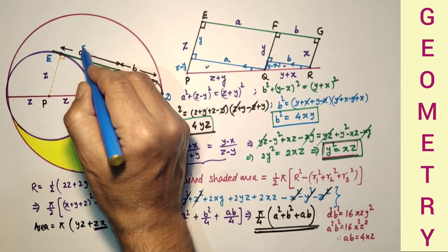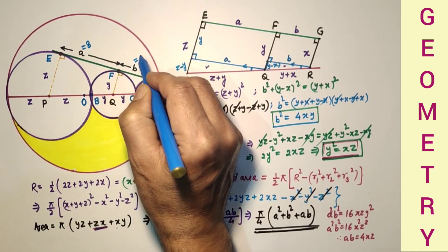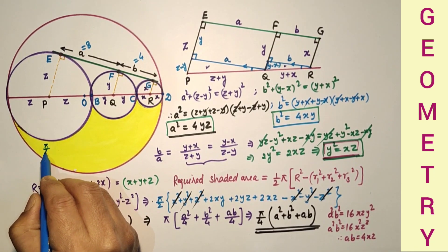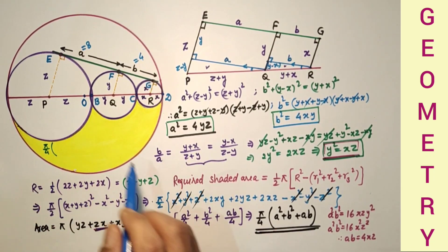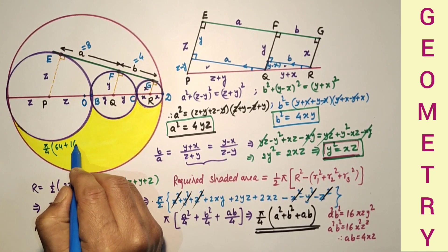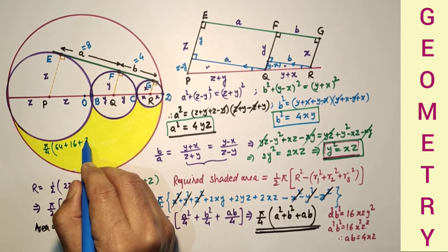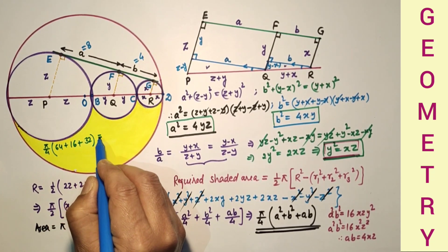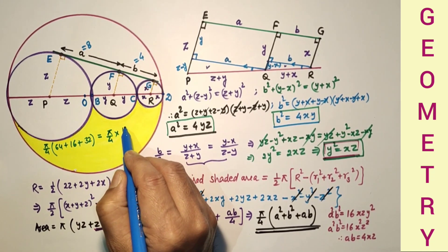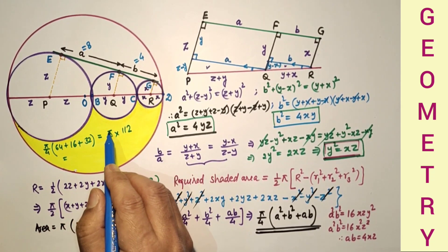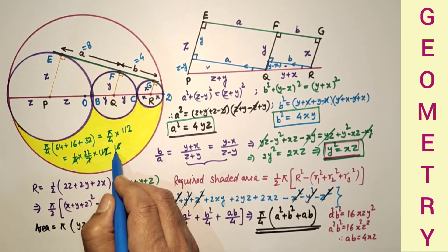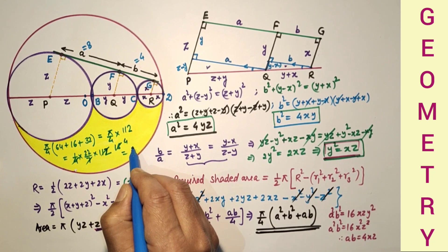If we put A = 8 and B = 4, then the required area equals π/4 times (A² + B² + AB) = π/4 times (64 plus 16 plus 32) = π/4 times 112. Taking π as 22/7, this gives 88 centimeter square.